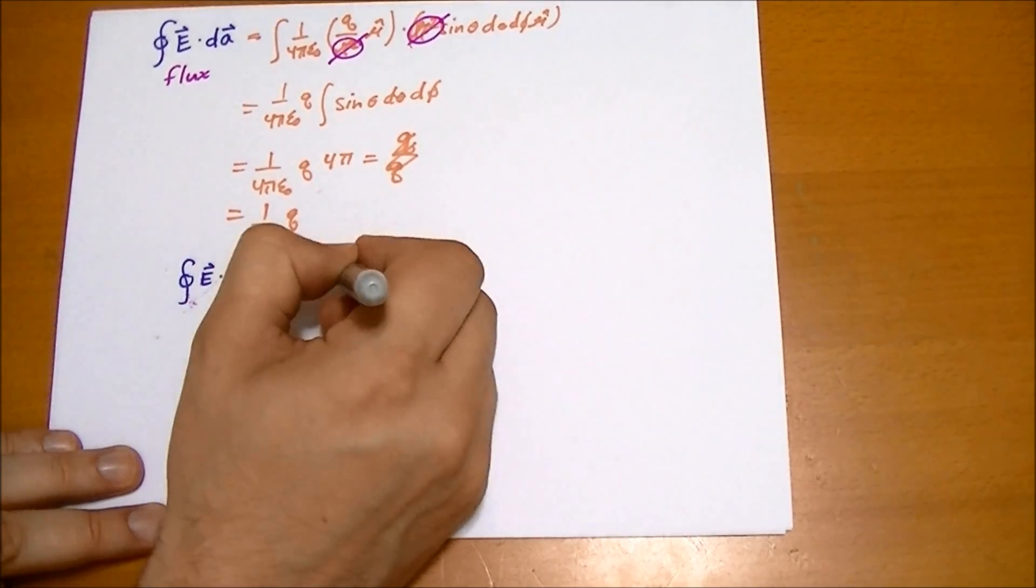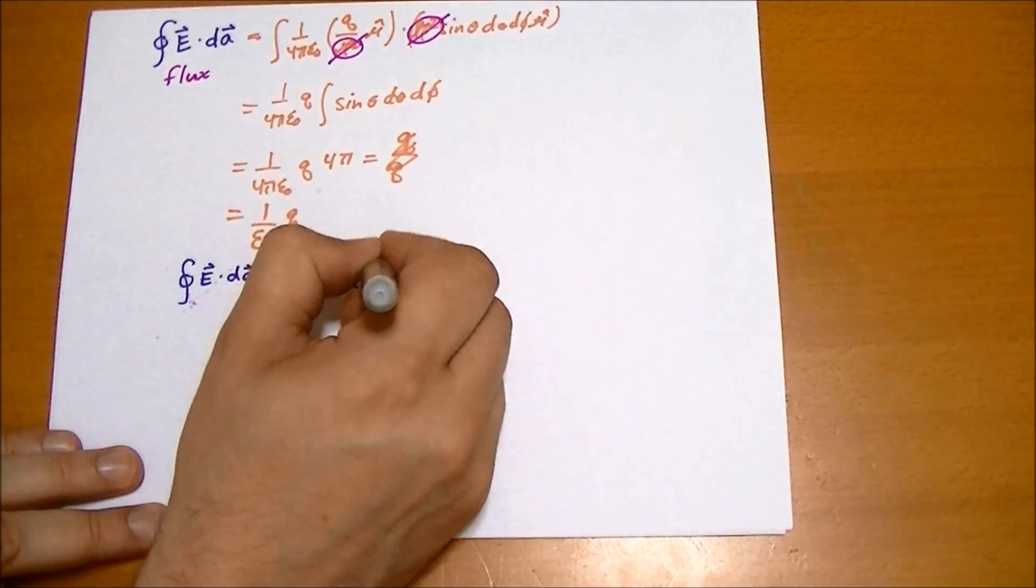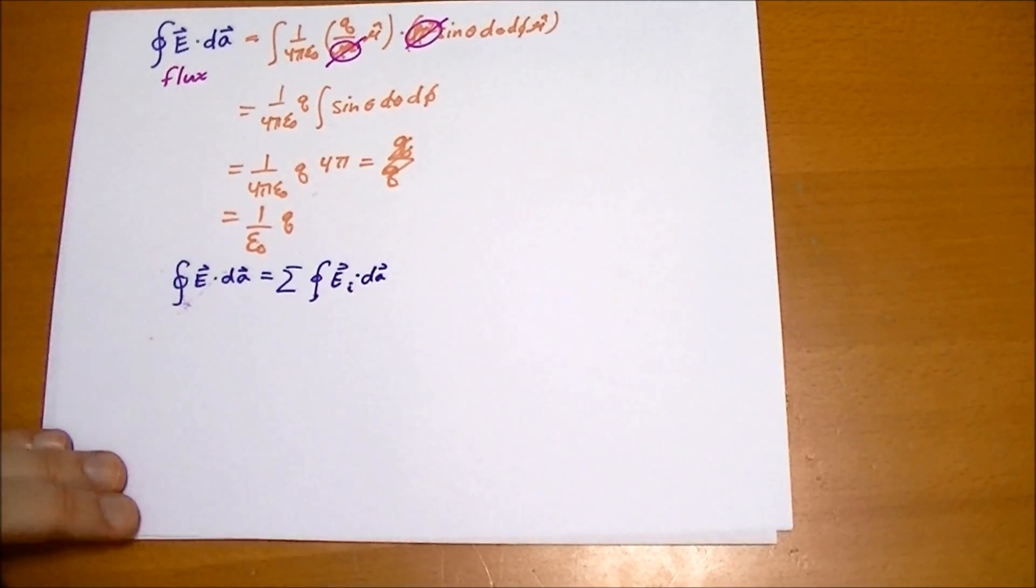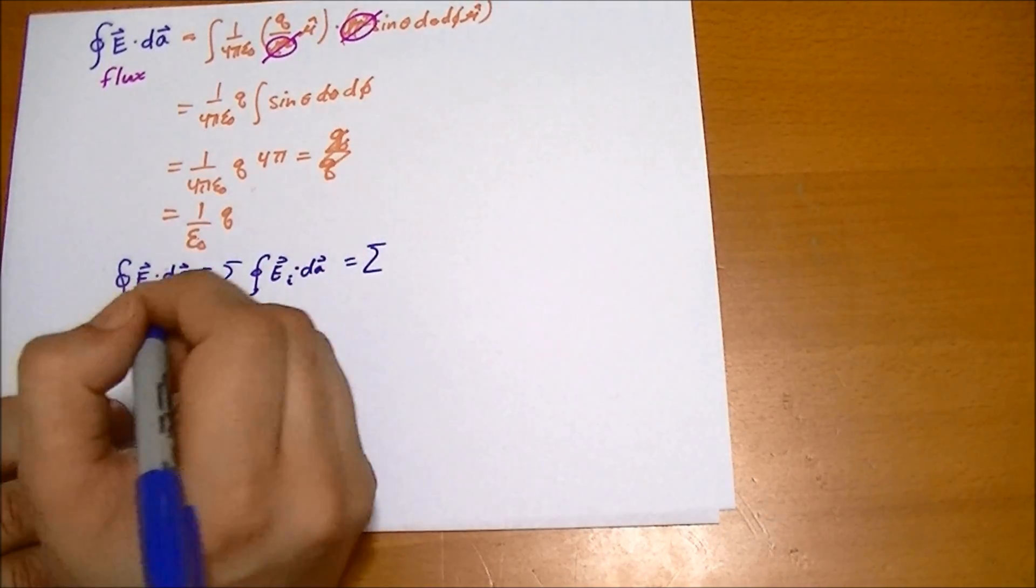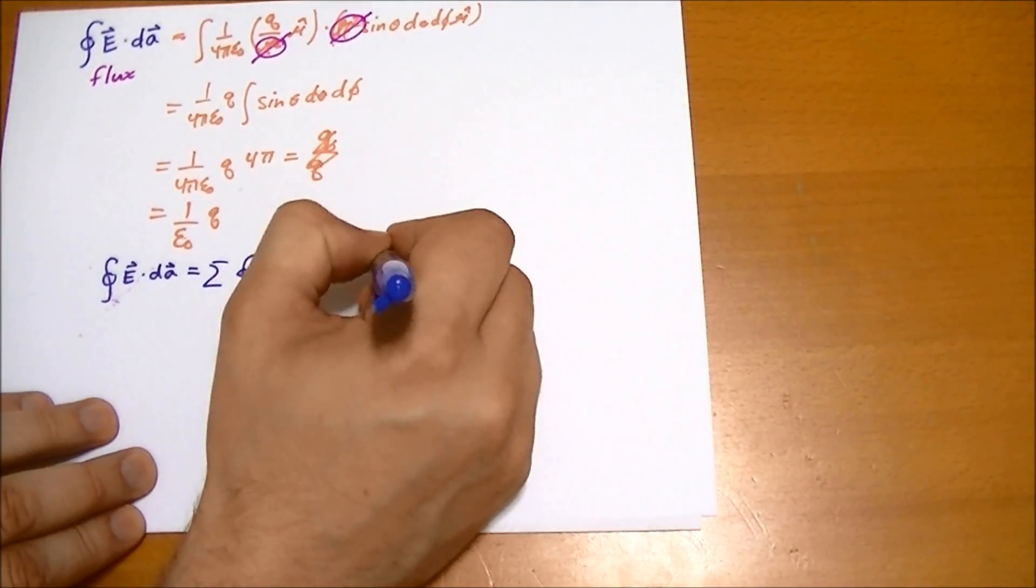Of E vector i dot dA, and you're just basically ignoring the other electric fields and just for the electric field of the particles inside, which will give you the sum of all the charges inside.